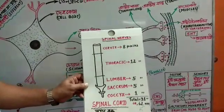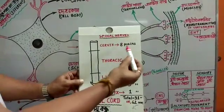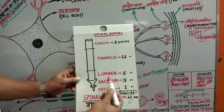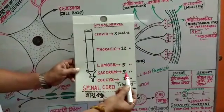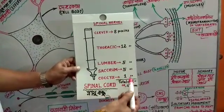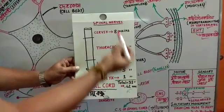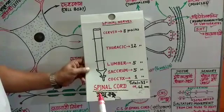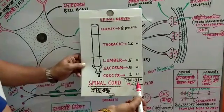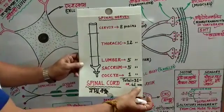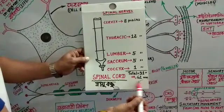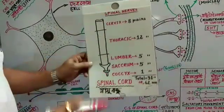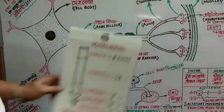This is the spinal nervous system. The cervical region has 8 pairs, the thoracic has 12 pairs, lumbar has 5 pairs, sacrum has 5 pairs, and coccyx has 1 pair — giving a total of 31 pairs of spinal nerves. Converting this to individual nerves, we get 62 spinal nerves in total.